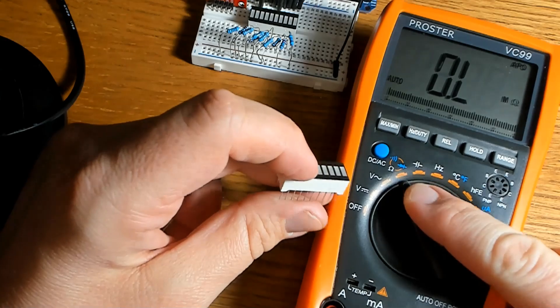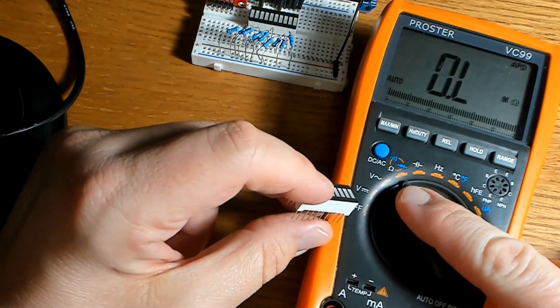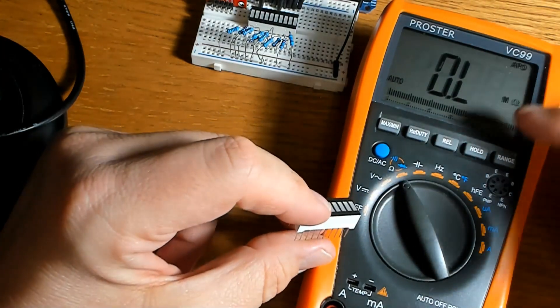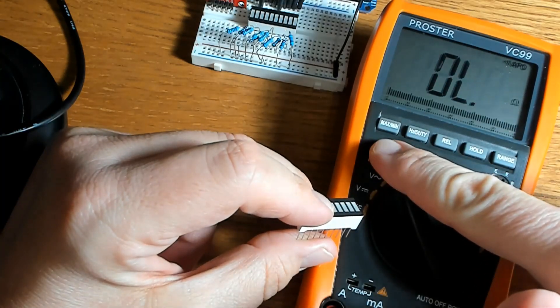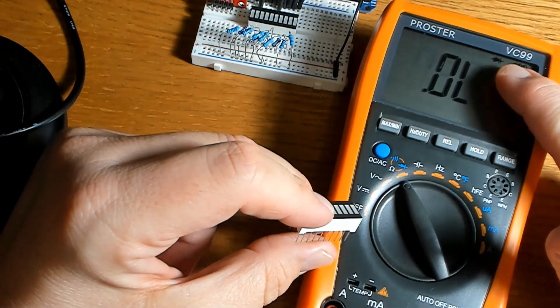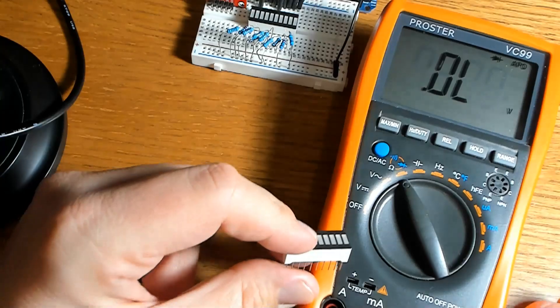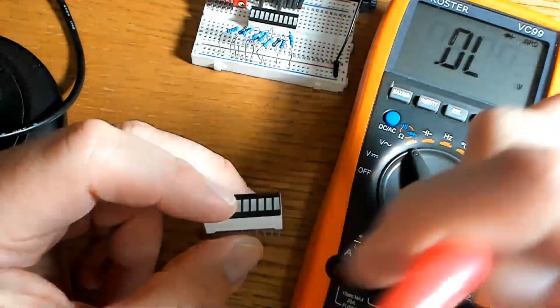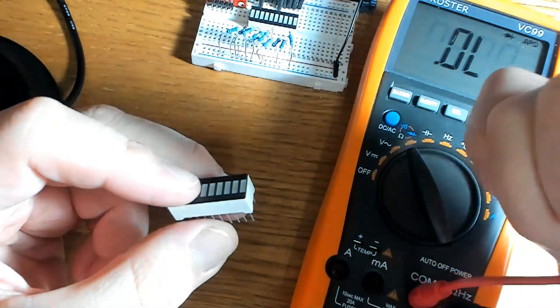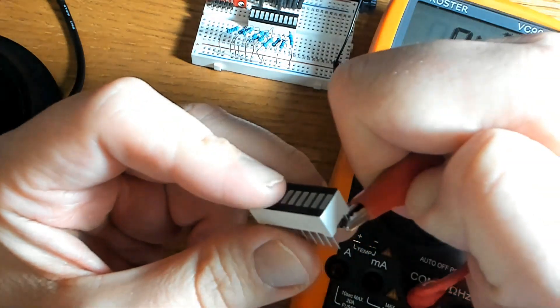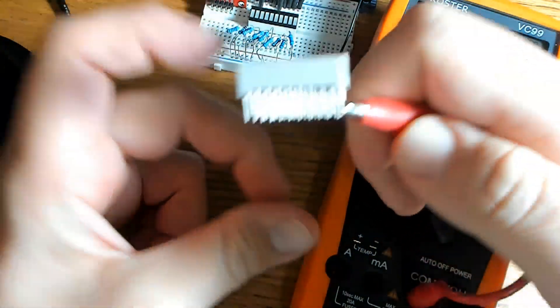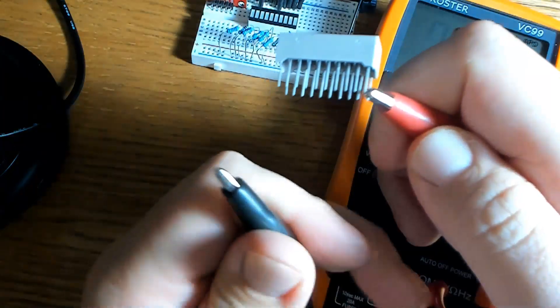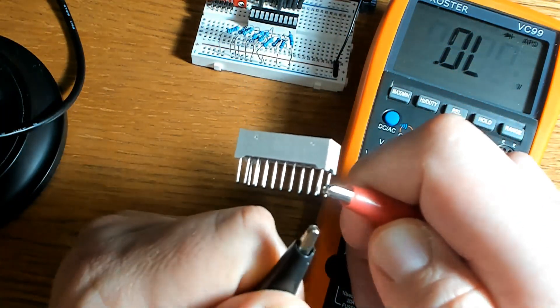Now what I've done is I've turned it to the ohms setting here and then you want to, for me I have to push the blue button to get the little LED symbol up here. And we can just connect the pins, connect one side to the positive and the other side to the negative and you should see it light up.